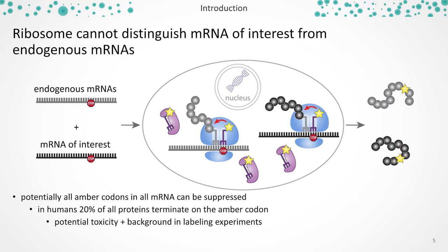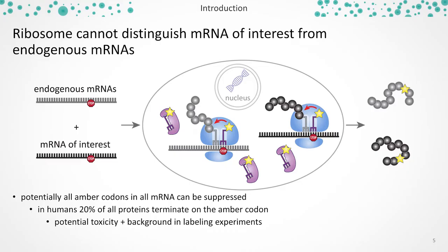However, this is already one major limitation of this technology. Because you choose one of the native stop codons, this will also terminate many other proteins in the cell, and nothing tells the ribosome to only translate your protein of interest with the expanded genetic code. For example, in humans, the rare amber stop codon still terminates 20% of the entire proteome.